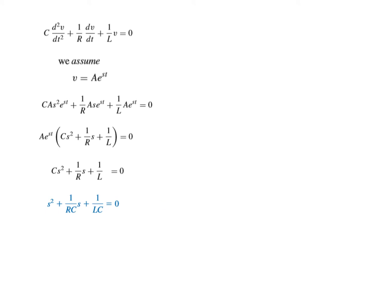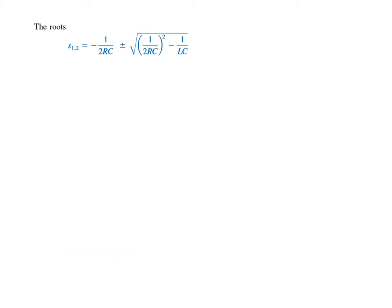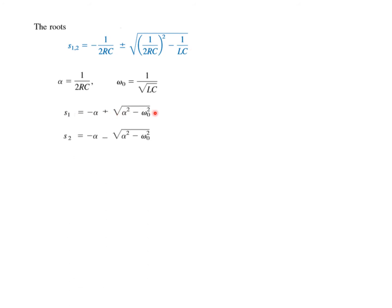Since it is a second-degree equation, it will have two roots. To simplify, we define alpha as 1/(2RC) and omega-zero as 1/sqrt(LC). Substituting these, the two roots S1 and S2 take a simplified form in terms of alpha and omega-zero.